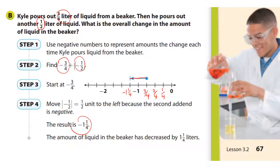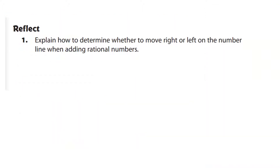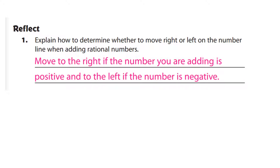The bars represent absolute value — they just want you to move a half unit, and we move in the negative direction. To determine whether to move right or left on a number line when adding rational numbers: move right if adding positive numbers, and move left if adding negative numbers.